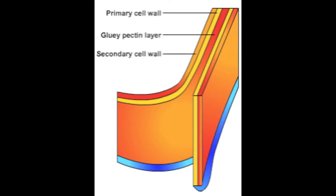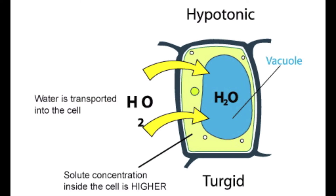Now you see, plant cells have an advantage over animal cells because they have a cell wall. When in a hypotonic solution, a plant cell can only expand so much before it exerts a back pressure, making the plant cell tough and firm — and that term is called being turgid.